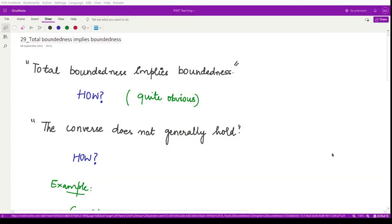Hello everyone, welcome to this video. In the previous videos we have learned about epsilon net and we have also seen what is total boundedness. So here we shall discuss that total boundedness implies boundedness. Let's see how this happens.